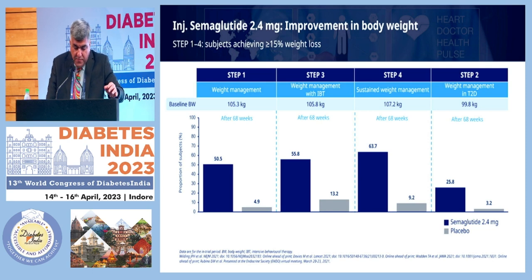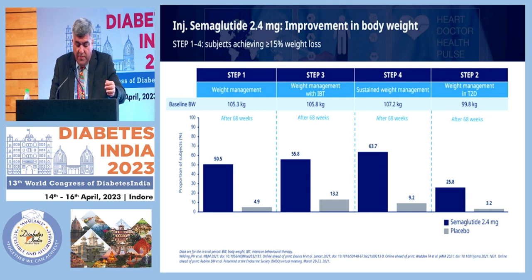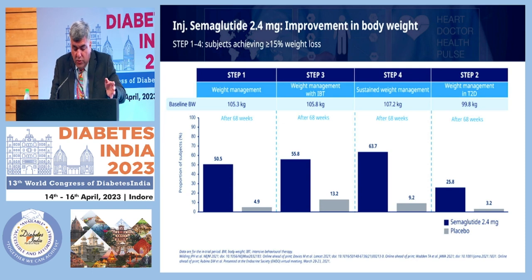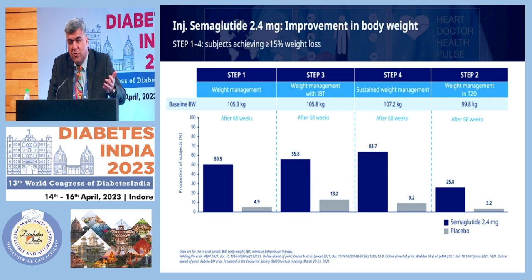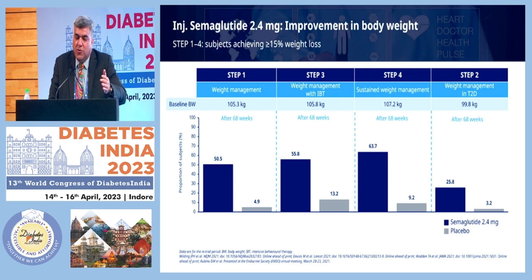Injectable semaglutide shows impressive improvement in body weight through the STEP program. Baseline weight in these obesity trials was approximately 105 kg. Across the STEP programs, 50 to 54% of patients achieved more than 15% weight loss. Conventionally, the benchmark was 10%, then 5% was seen as meaningful. But now GLP-1 RAs — and other agents in the pipeline — are showing 50 to 80% of patients achieving more than 15% weight loss.